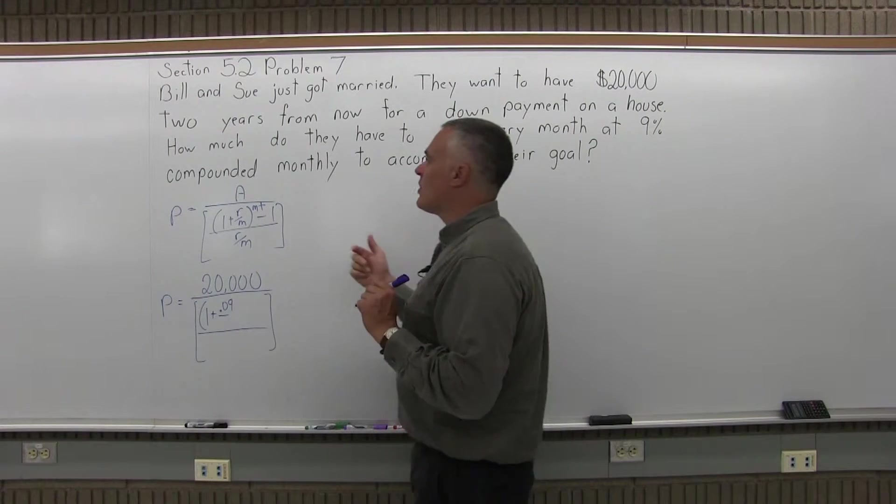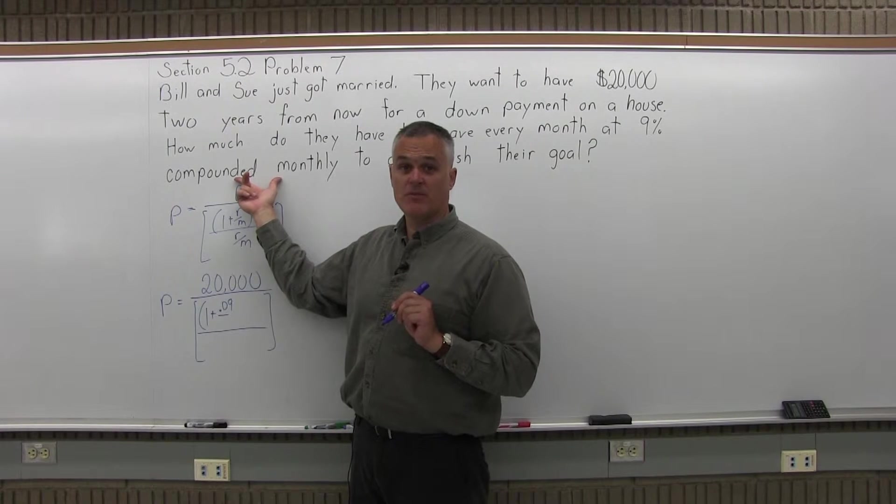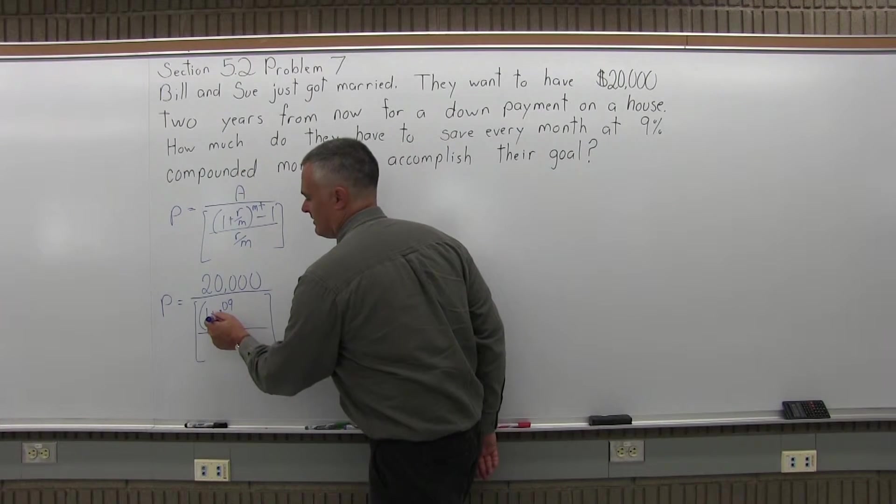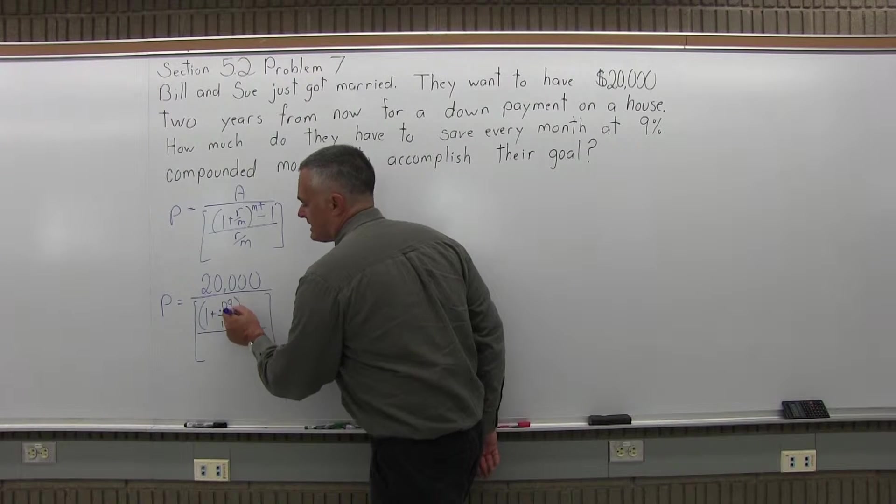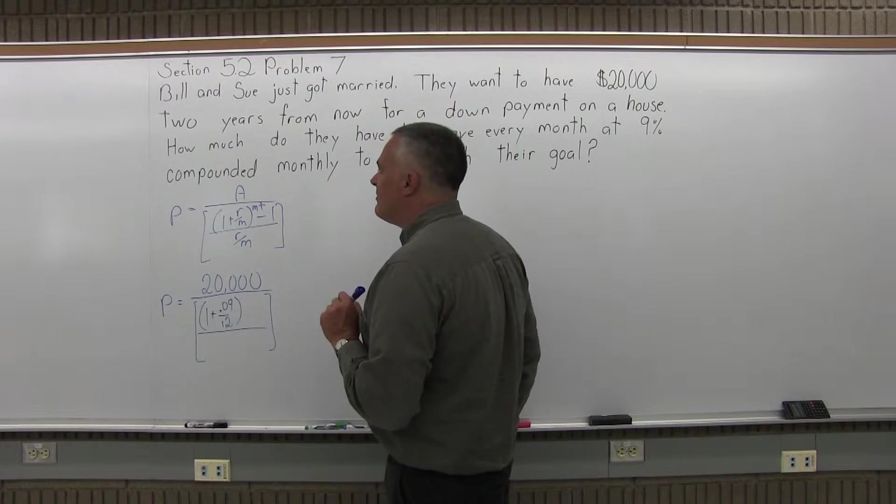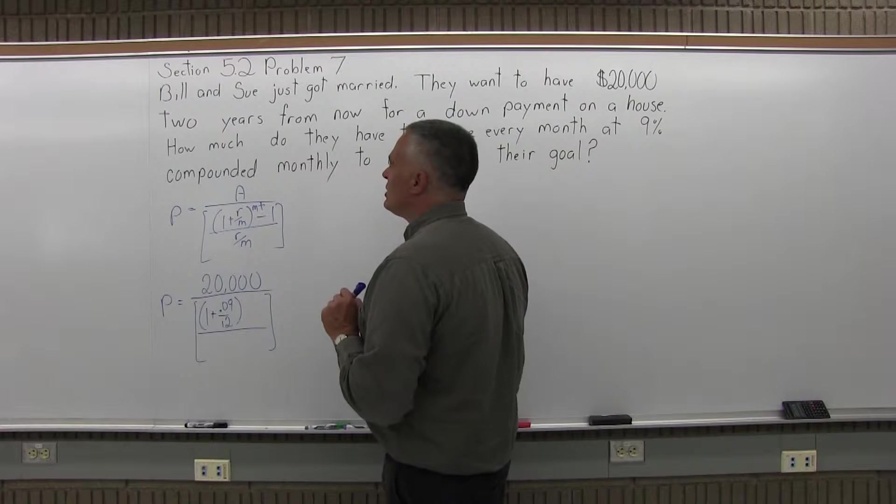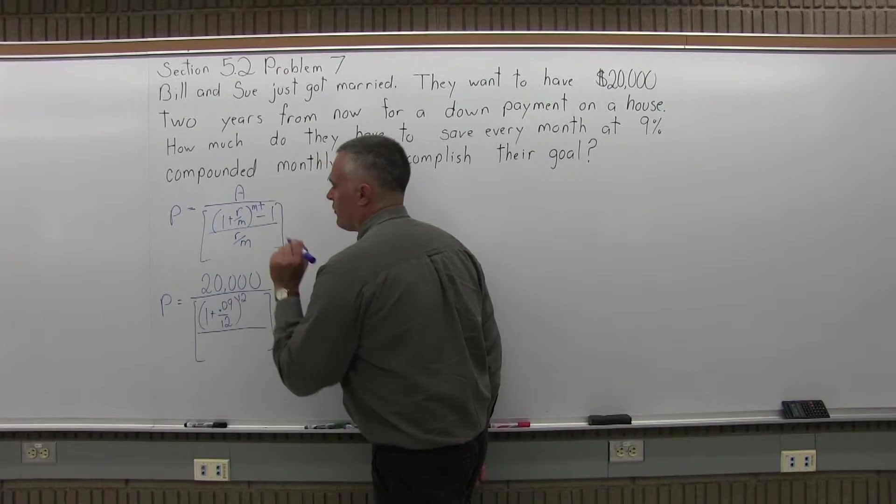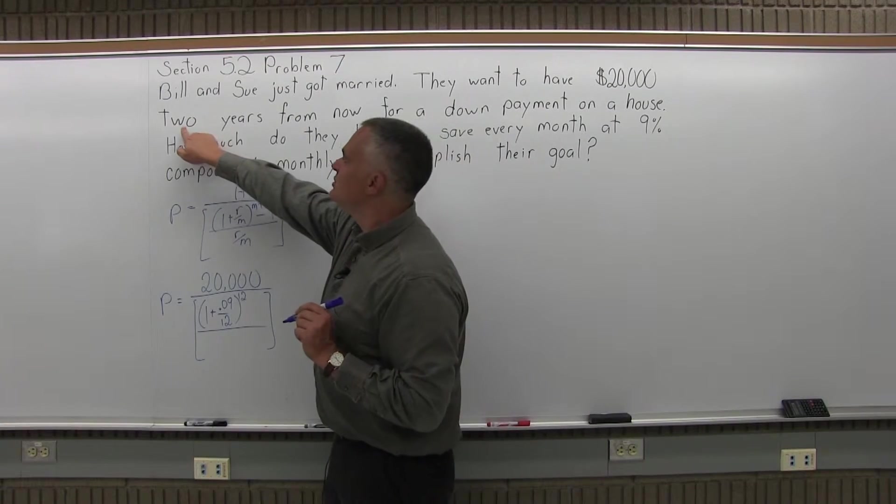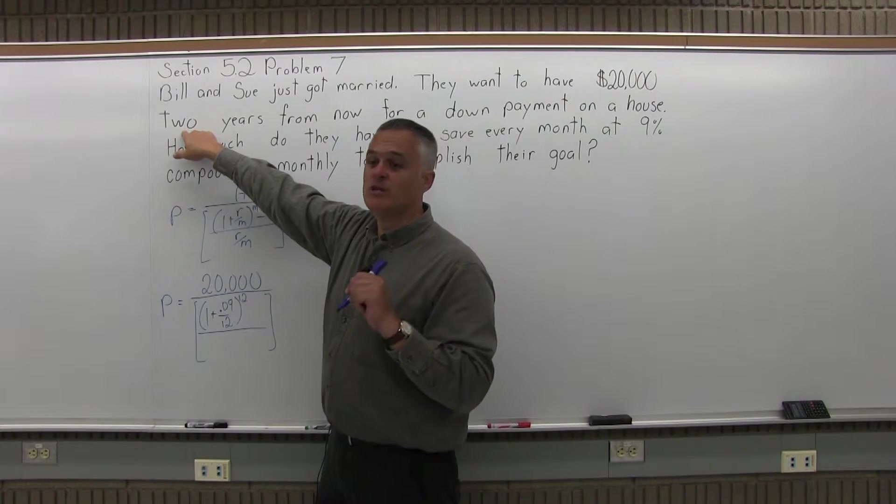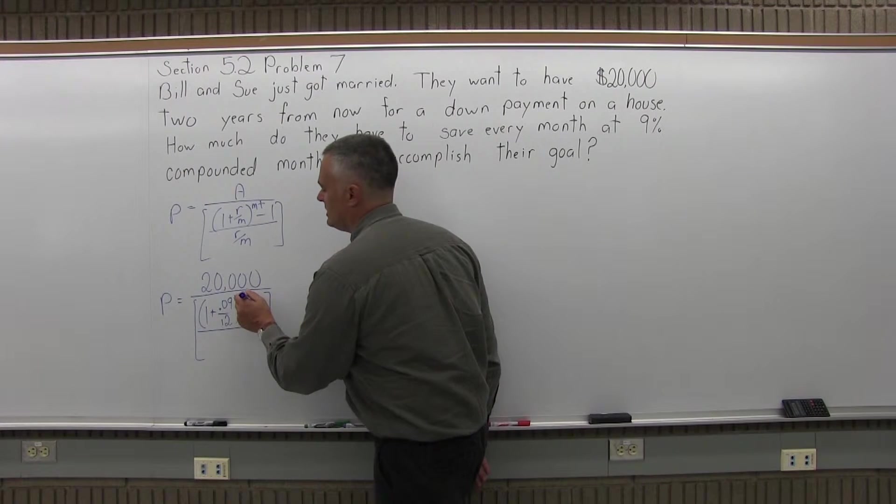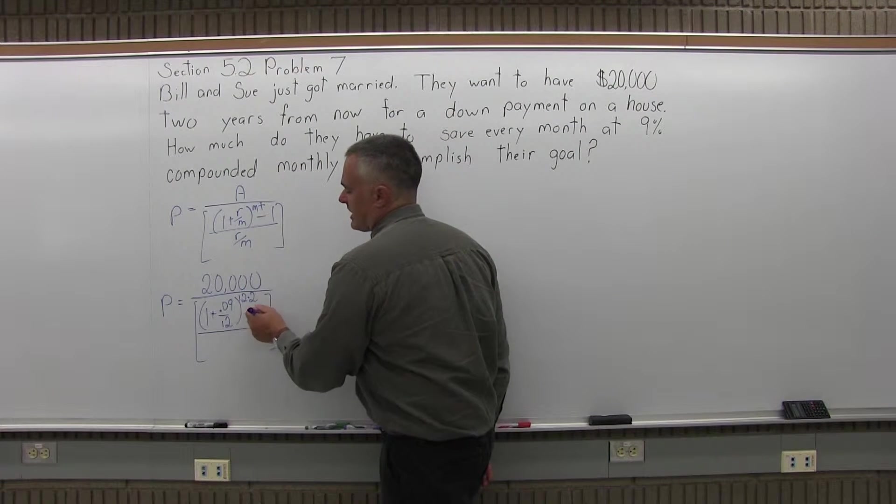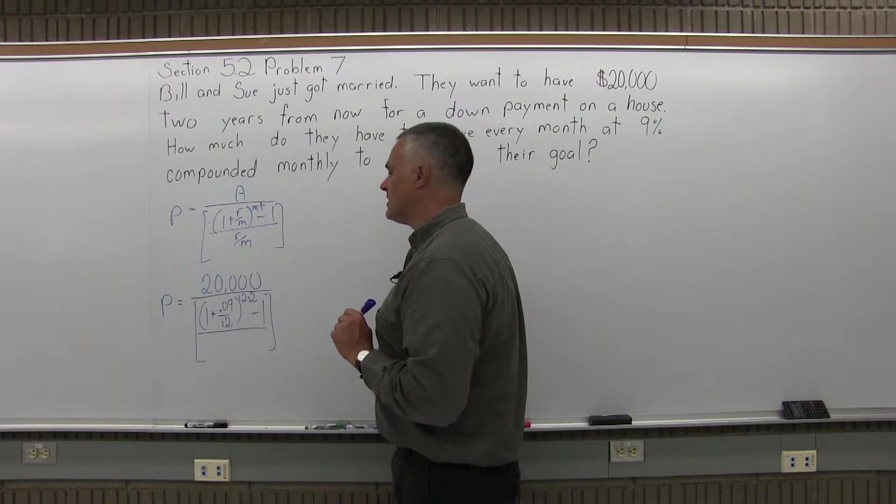And underneath the R is an M. M is the type of compounding. How many times do you compound per year? We have monthly compounding in this problem. So 12, for monthly compounding. And the T is 2 because the problem says in 2 years. They're going to save money for 2 years. And after the parentheses is a minus 1. You want to be careful not to forget that.